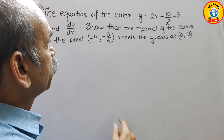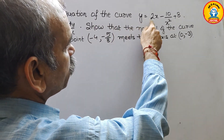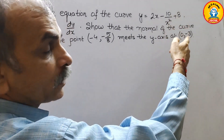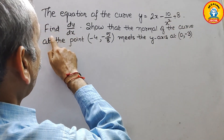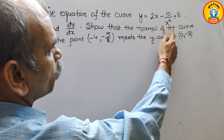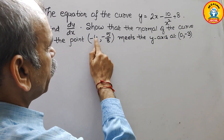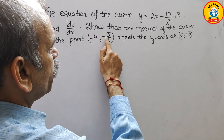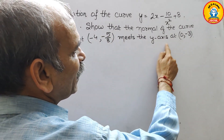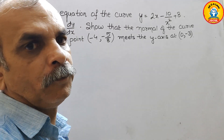Your question is: the equation of the curve y is equal to 2x minus 10 by x squared plus 8. Find dy by dx, and show that the normal of the curve at the point minus 4 comma minus 5 by 8 meets the y-axis at 0 comma minus 3.